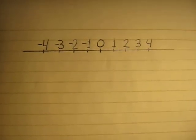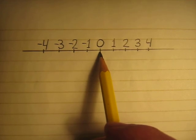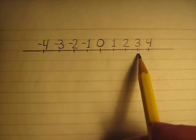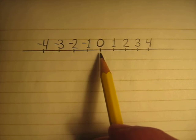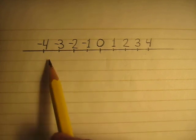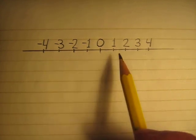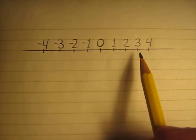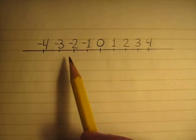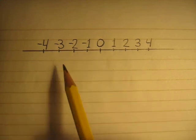This is a number line. In the middle we have 0, and on the right side we have positive numbers, on the left side from 0 we have negative numbers. Also, numbers on the right side are bigger than numbers on the left side.